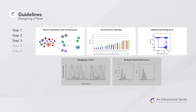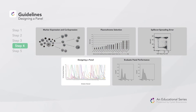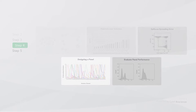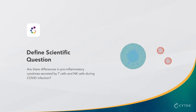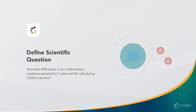These concepts are easy to apply when designing a low-parameter panel, such as a 5-marker assay. Here, we will design a moderately complex 19-color panel to see these best practices in action. Let's prepare the information we will need as outlined in video 1. Our scientific question is: Are there differences in pro-inflammatory cytokines secreted by T cells and NK cells during COVID infection?